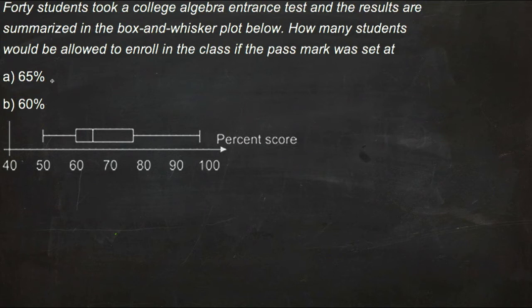In other words, to get into the class, you have to pass the entrance exam. The question is whether the pass mark would be set at 65% or at 60%. We want to know how many students would make it in based on which of those two points were chosen.